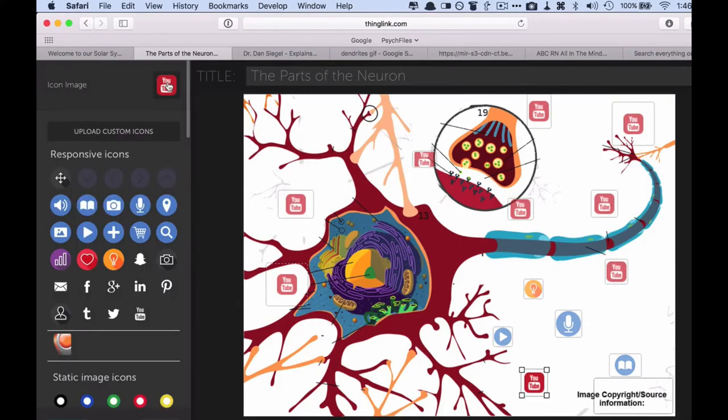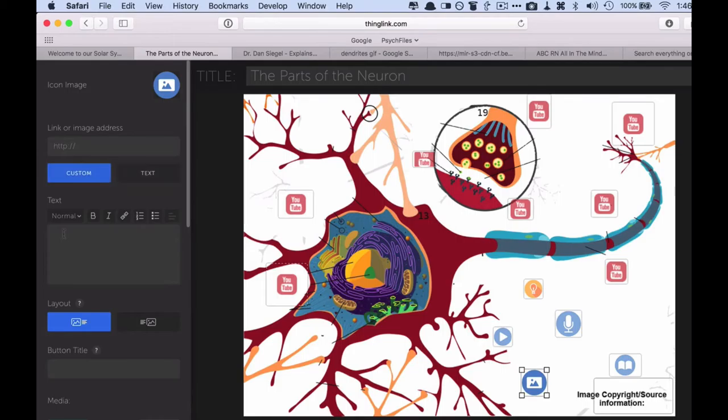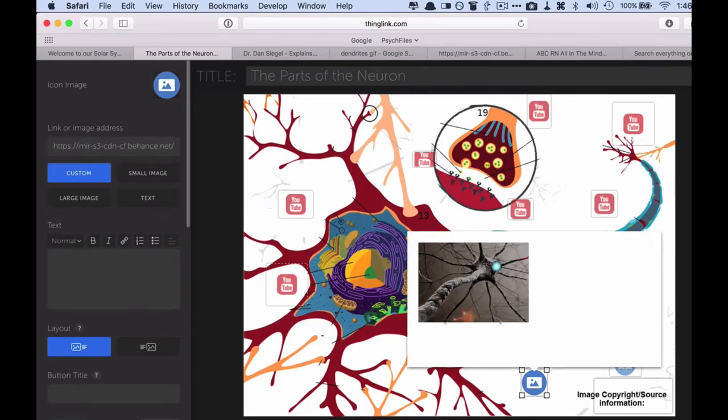Change it from YouTube in this case to, let's say, the image icon. And then just put the address in. And there it is. It'll play right there on top of the image.